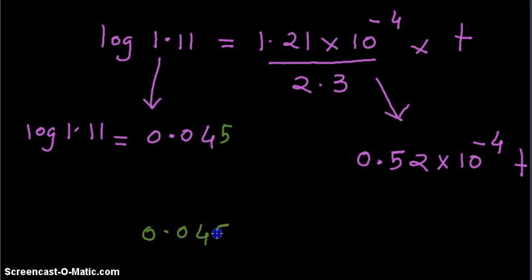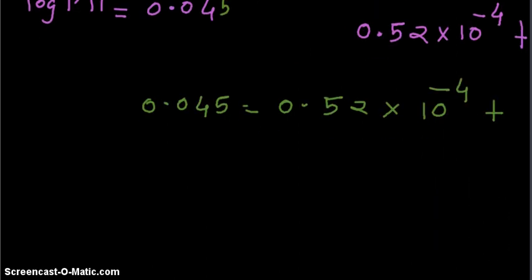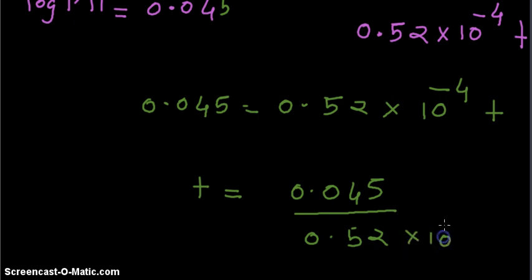0.045 is equal to 0.52 times 10 raised to minus 4 t, which gives t is equal to 0.045 divided by 0.52 times 10 raised to minus 4.